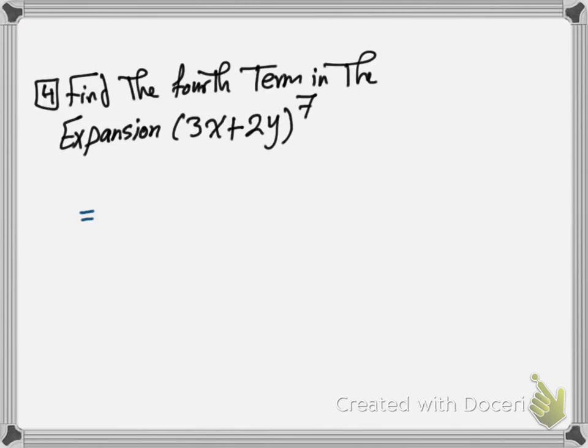How can I find a specific term in the expansion of (3x + 2y)^7? For example, I am asking about the fourth term. We all know that the fourth term consists of three things.